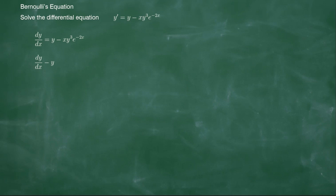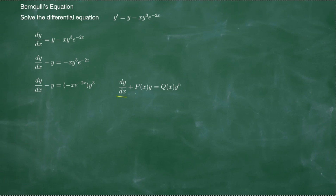We have dy over dx minus y equals negative x times y cubed times e to the negative 2x. On the right side of the equation, we rearrange the factors so that we have negative x times e to the negative 2x multiplied by y to the power of 3. This is now a Bernoulli's equation in the form dy over dx plus p(x) times y equals q(x) times y to the n.